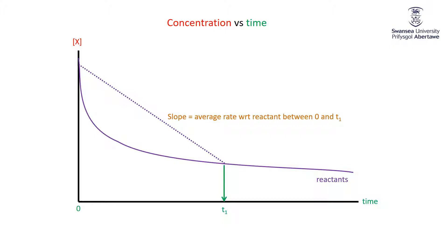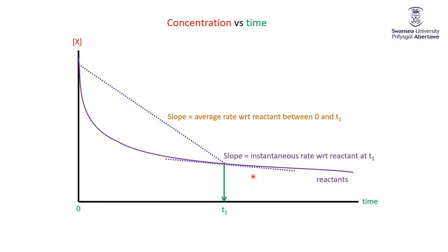What we can do instead is define the slope as the tangent to the graph at T1 — draw the tangent so it's just touching the graph at T1 — and then the slope of this tangent line is the instantaneous rate with respect to the reactant at time T. There's nothing special about time T, but the instantaneous rate gives us a lot more information about what's happening there. It has no information about anywhere else, but presumably the rate would be bigger before T and smaller after T.